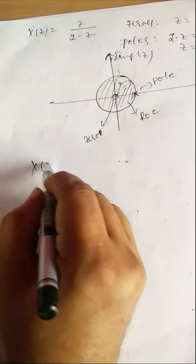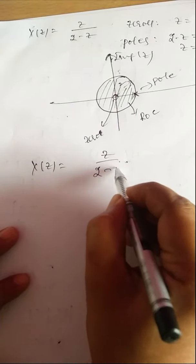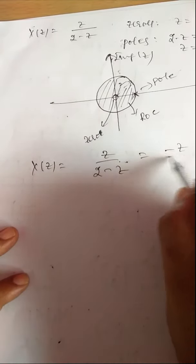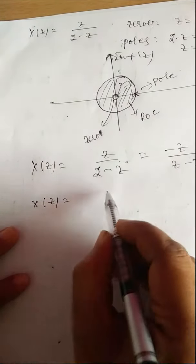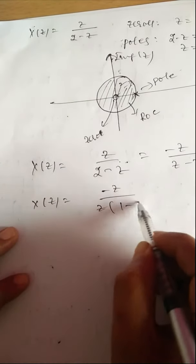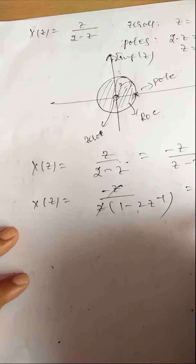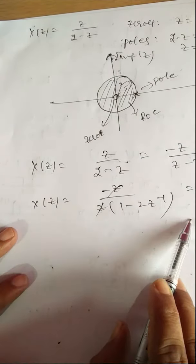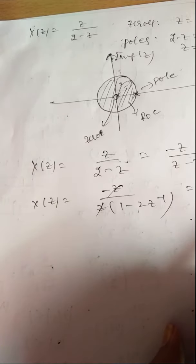One more thing to observe: X(z) = Z/(2-Z). Taking minus common gives -Z/(Z-2). Taking Z common in the denominator: -Z / [Z(1 - 2Z^(-1))], the Z cancels, giving -1/(1 - 2Z^(-1)). When doing inverse Z-transform, this form is very useful: -1/(1 - 2Z^(-1)) has inverse Z-transform equal to 2^n · u(-n-1).